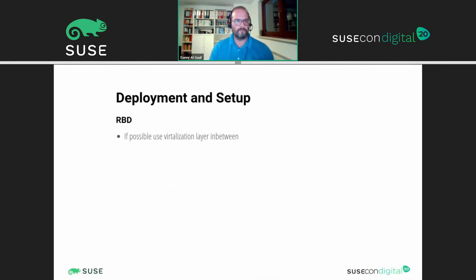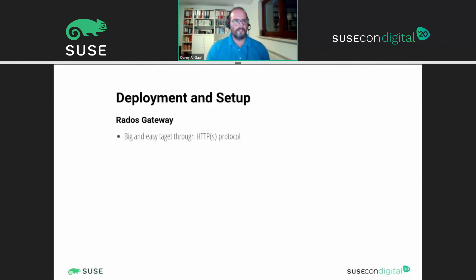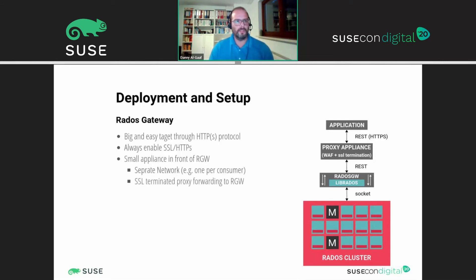For RADOS Block Devices, if possible use the virtualization layer, apply quotas, and without the virtualization layer consider using iSCSI in between. For the RADOS Gateway, which is a very big target, you should always enable HTTPS and SSL. You could also put a web application firewall in front of the RADOS Gateway to do the SSL termination, and could also use a separate network for that.